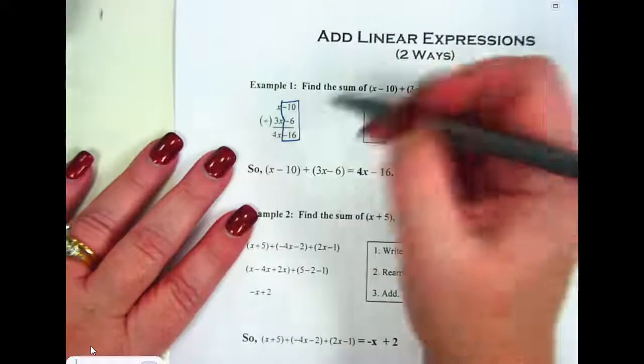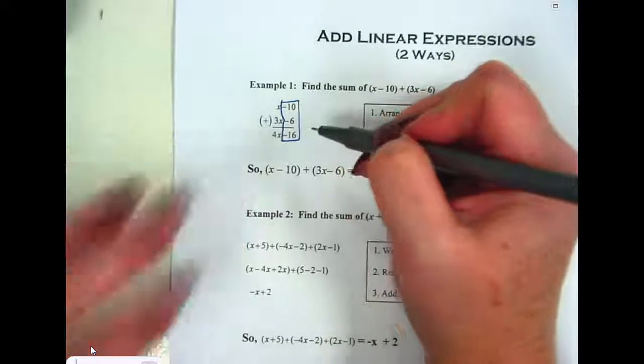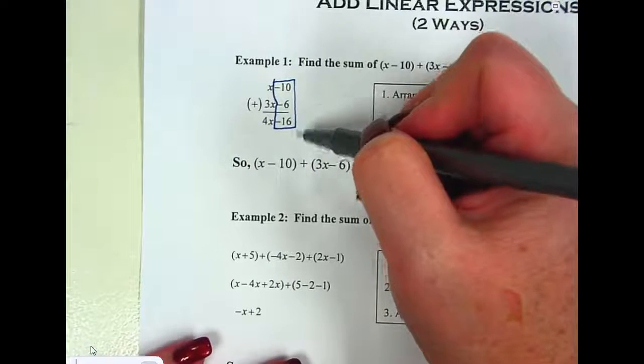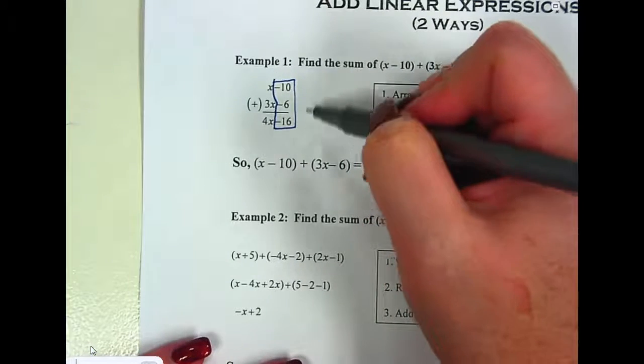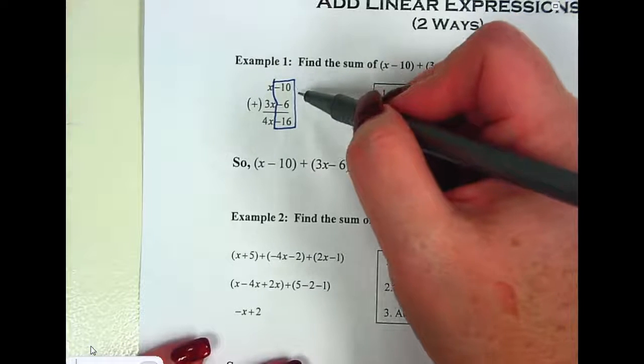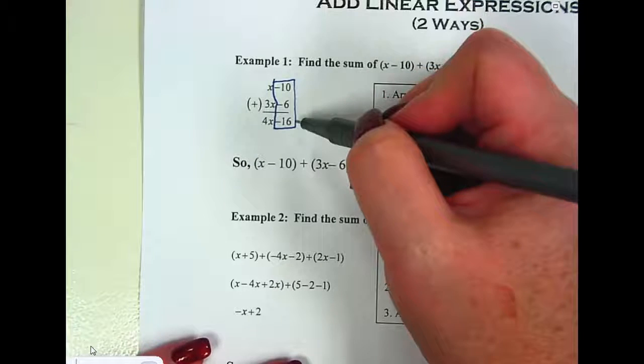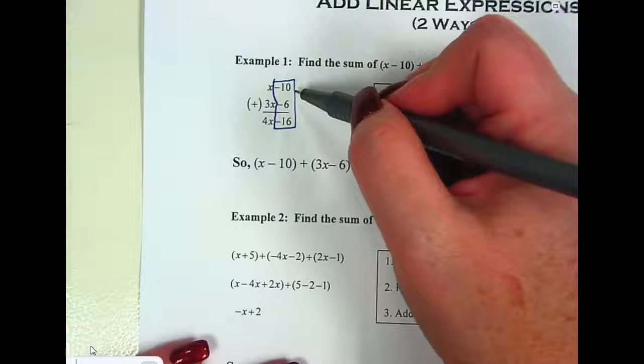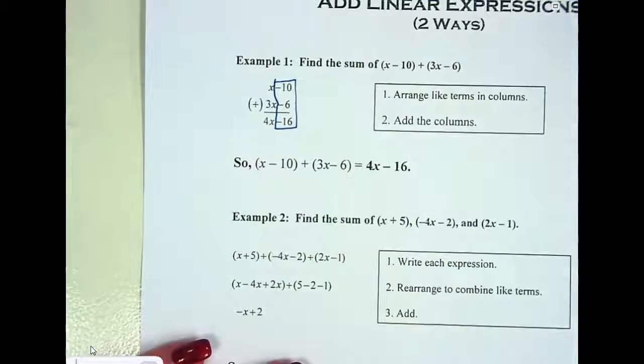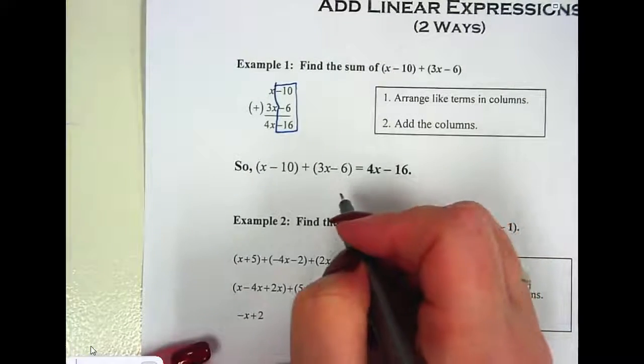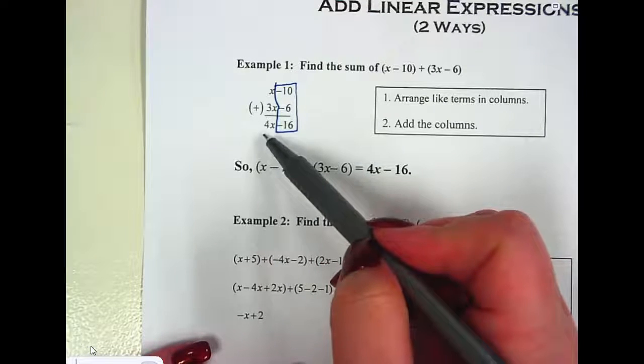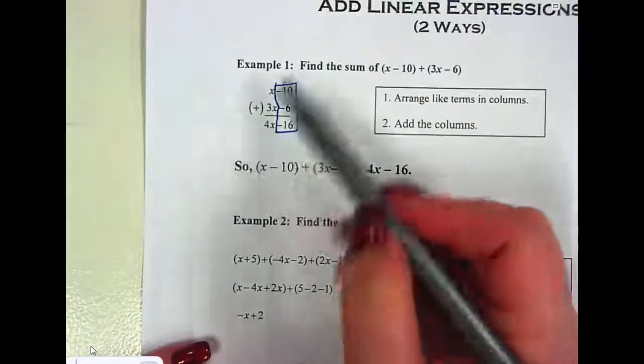Negative 10 minus 6 is negative 16. Do we all understand why? Can someone explain to me why negative 10 minus 6 is negative 16? Add a line and change the sign, so it would be negative 10 plus negative 6. Can anybody explain it on a number line? We'd start at negative 10 and we would go six more in the negative direction, land at negative 16. And then here we have 1x and to that we're going to add three more x's, so that is a total of 4x.